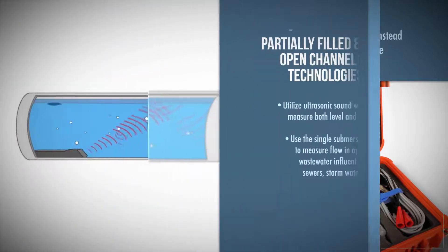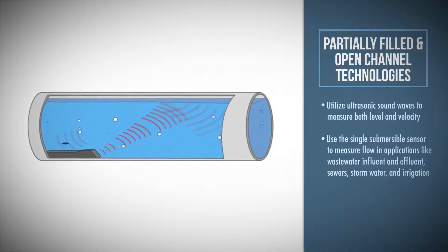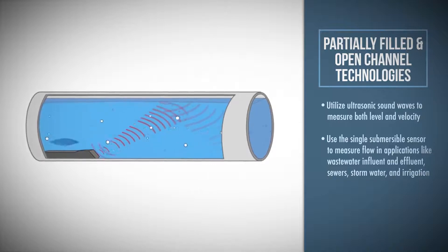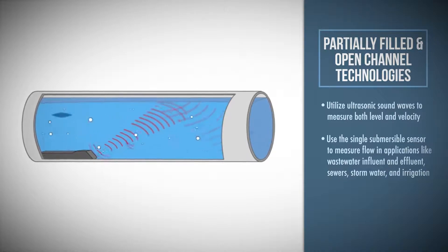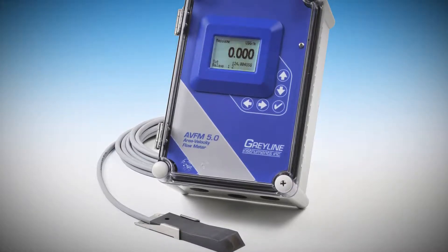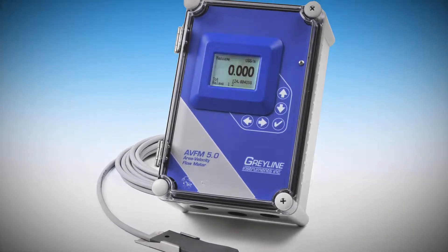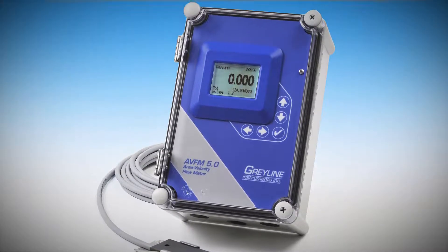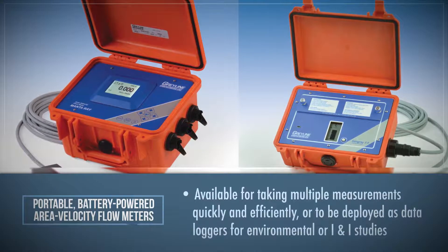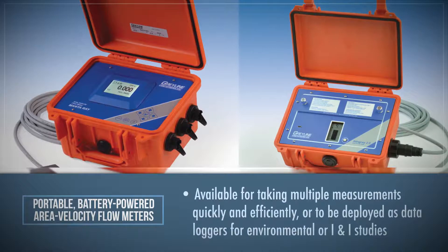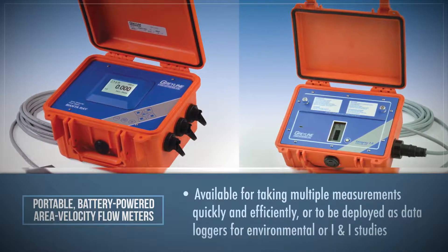Grayline's partially filled pipe and open channel technologies utilize ultrasonic sound waves to measure both level and velocity. Flow rate is calculated by this area velocity meter once the channel shape and size are programmed. Use the single submersible sensor to measure flow in applications like wastewater influent and effluent, sewers, storm water, and irrigation. Portable battery powered area velocity flow meters are available for taking multiple measurements quickly in the field or to be deployed as data loggers for environmental or I&I studies.